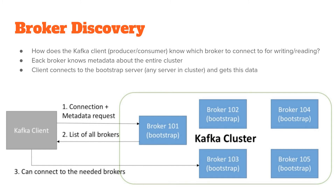A Kafka client can easily connect to any server within the cluster, known as the bootstrap server. As we can see in the diagram, the Kafka client sends a connection plus metadata request to broker 101, which is the bootstrap broker. The bootstrap server then returns the list of relevant brokers to the Kafka client, and in step 3 the Kafka client can choose to connect to the needed broker, which in this case is broker number 103.